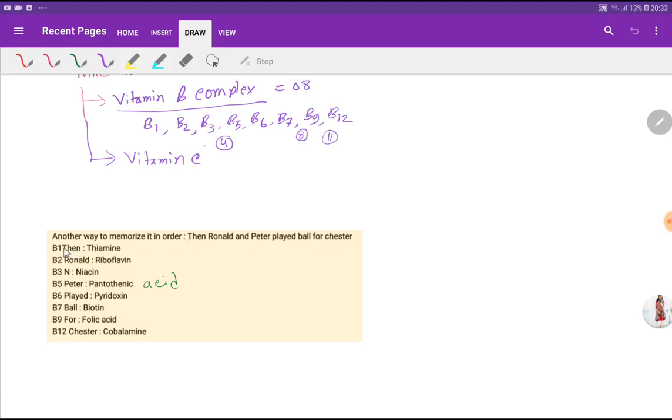Look at here, we'll start from vitamin B1. 'Then' for thiamine, 'Ronald' for B2 riboflavin, and 'and' we'll take for B3 niacin.